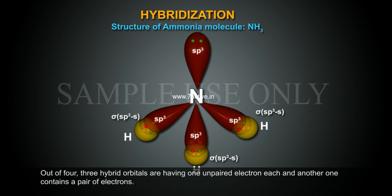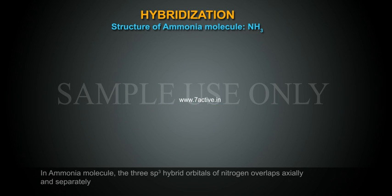Out of four, three hybrid orbitals are having one unpaired electron each and another one contains a pair of electrons.